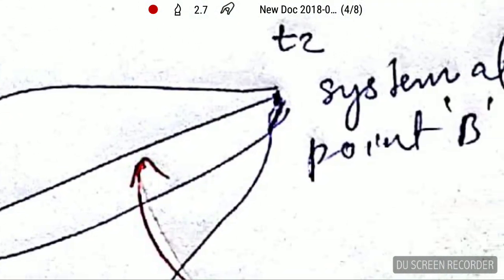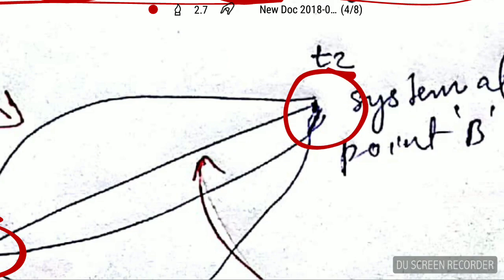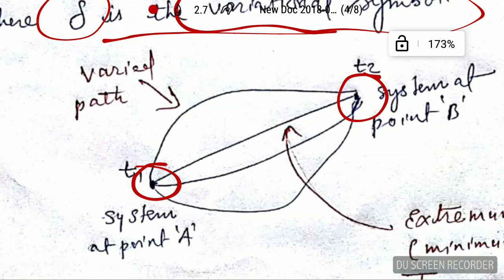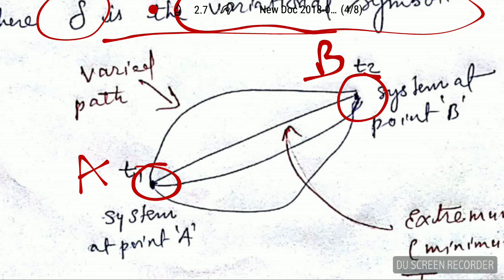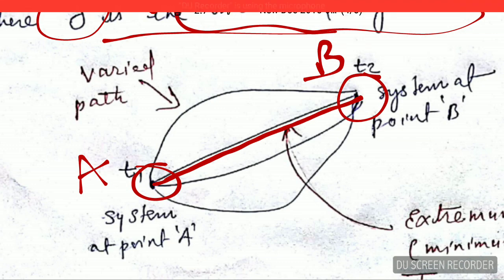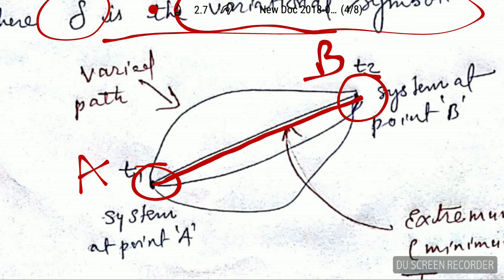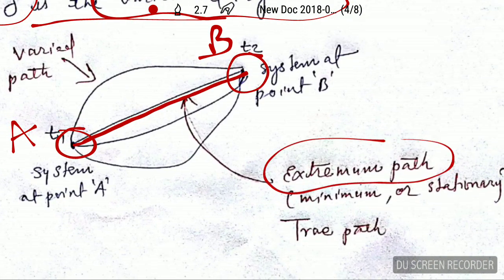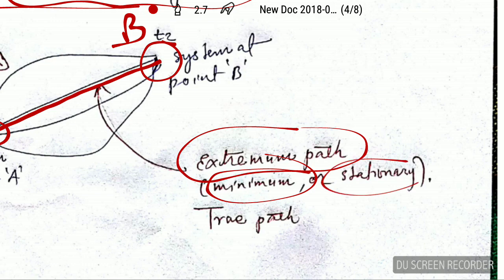There are lots of paths possible in going from point A to point B. The straight line connecting A to B is the minimum path — it is constant, it is the minimum possible value. This straight line is called the extremum path, or minimum path, or stationary path, and according to Hamilton's principle, this should be the correct path.